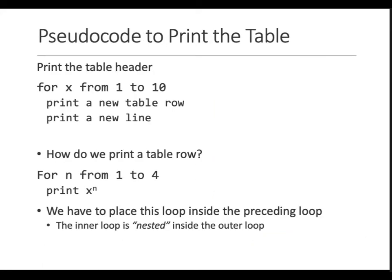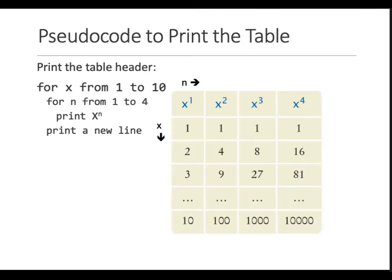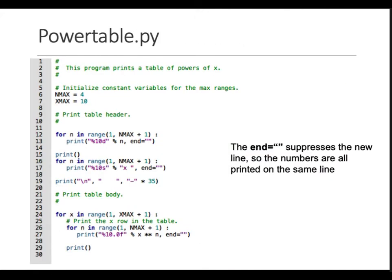I'm going to jump directly to the code. The pseudocode says: print a new table row, then print a new line. Here's how we print a table row — I'll show you the code for the table. So you have ten rows and four columns. For n, which is any variable, in the range that starts with one and ends at n_max or column plus one.